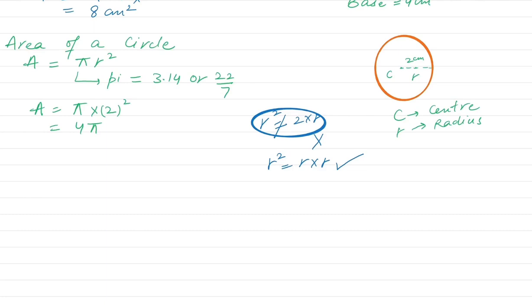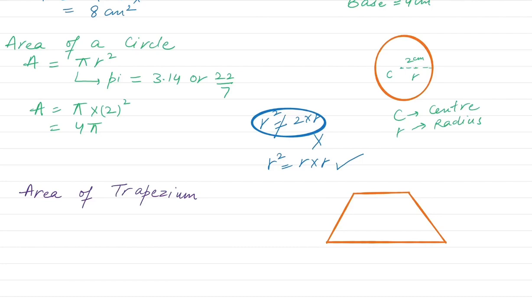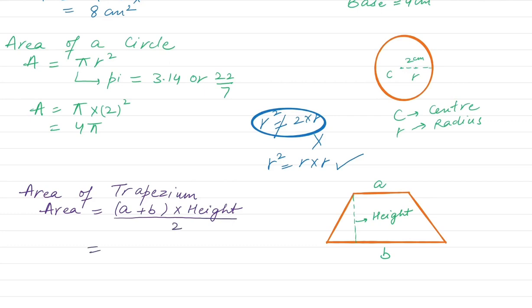Let's find the area of another 2D shape: the area of a trapezium. A trapezium has two parallel sides — one side is bigger, one is smaller — and two non-parallel sides. We need to draw a perpendicular height in the trapezium. Let's call the parallel sides A and B, and this is the height. The formula to find the area of a trapezium is: A plus B, multiplied by height, divided by 2 — or equivalently, half times height times A plus B. Either way works.